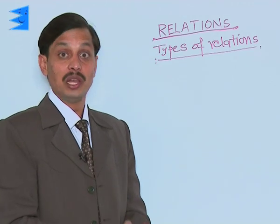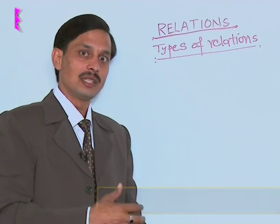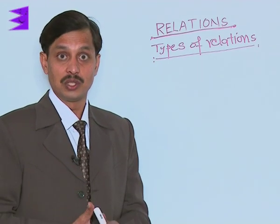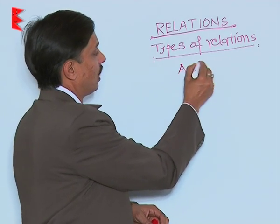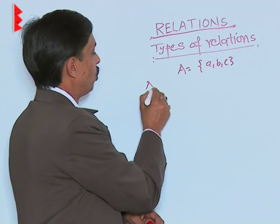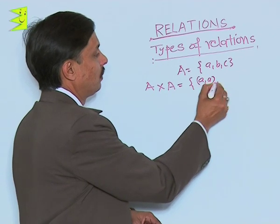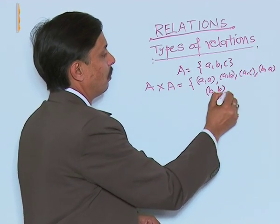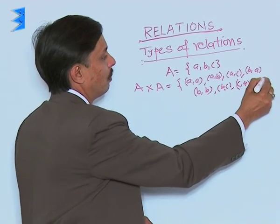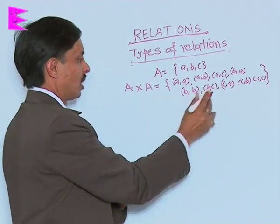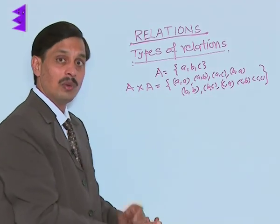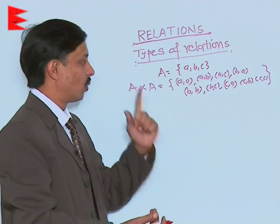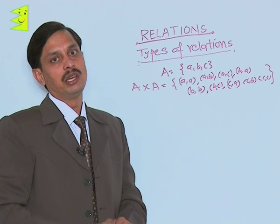The question is how many types of relations we have. At this level of class eleventh, we need to understand how many types of relations we have after getting the concept of what a relation is. If A is a set having elements A, B, C, then A cross A will have ordered pairs: A,A; A,B; A,C; B,A; B,B; B,C; C,A; C,B; and C,C. There are nine elements and the total number of subsets that can be formed is 2 to the power 9. Every subset is known as a relation. Out of all these relations, a few are given specific names.